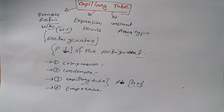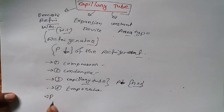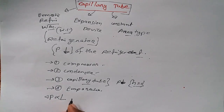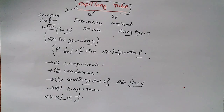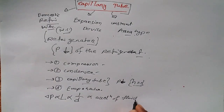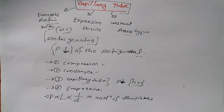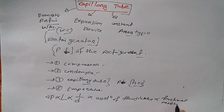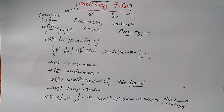The most important equation from the capillary tube: for a constant area type, pressure drop is directly proportional to the length of the capillary tube, and inversely proportional to the diameter. Additionally, acceleration of fluid is directly proportional to the pressure drop, and frictional resistance is also a related factor. These five things are all related to the capillary tube.